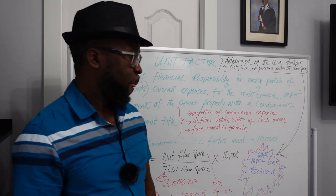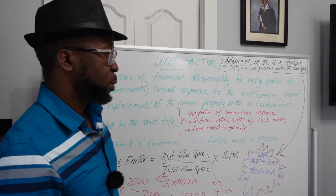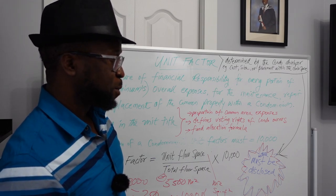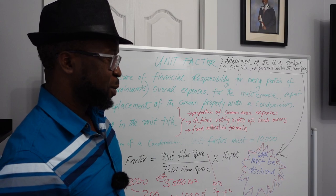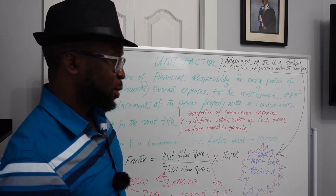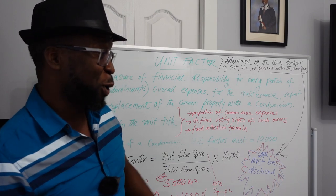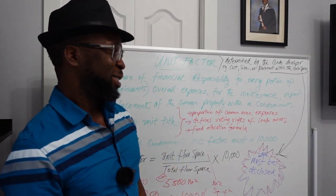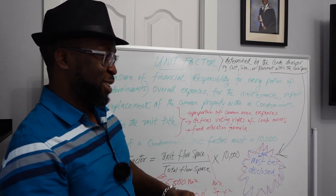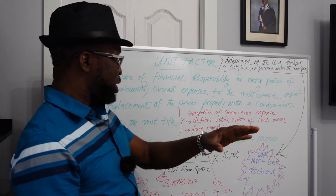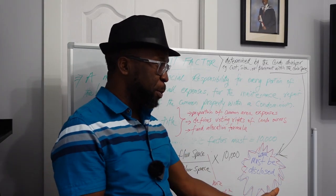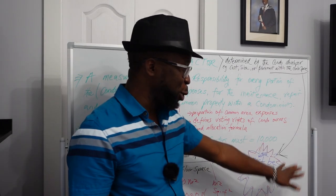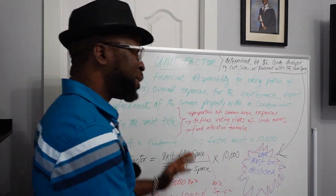A student mentions an example where a condo was worth $450,000 and the unit factor was 250, asking about the share or voting rights from those figures. The instructor clarifies: the price of the condominium is entirely different from the unit factor. The condominium could be $350,000 today and $450,000 tomorrow — the market price changes, but the unit factor is determined by the developer when the condo was being developed, so it is relatively constant.